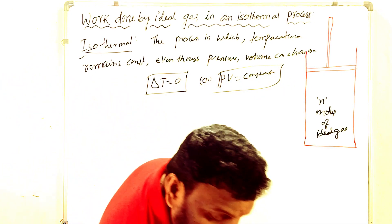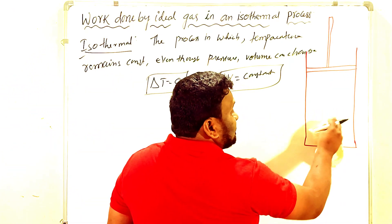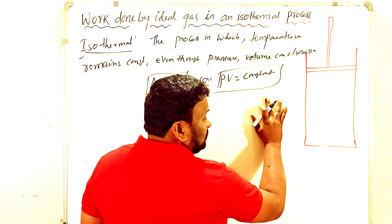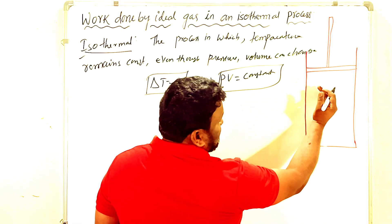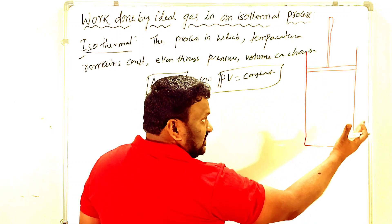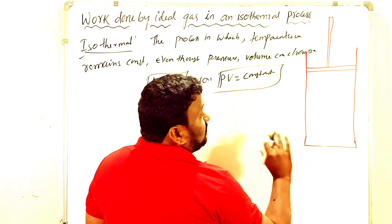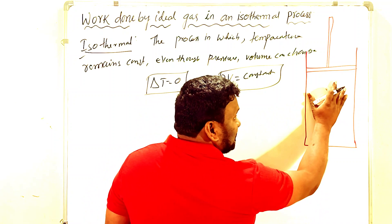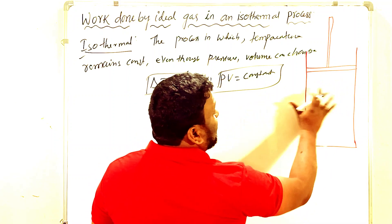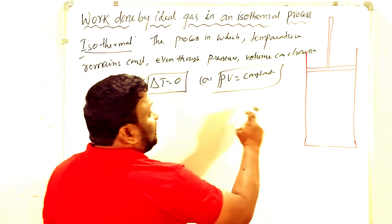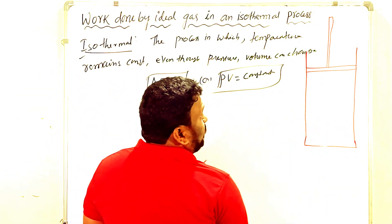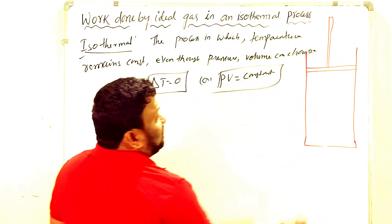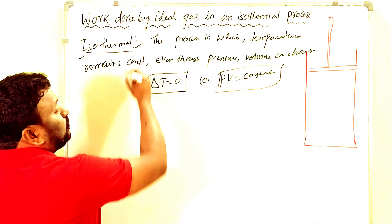We are considering a container with a movable piston — the system — and everything else is the surroundings. When any changes occur in the thermodynamic system — changes in pressure or volume — but there is no change in temperature, that means there is no change in temperature between the system and surroundings.